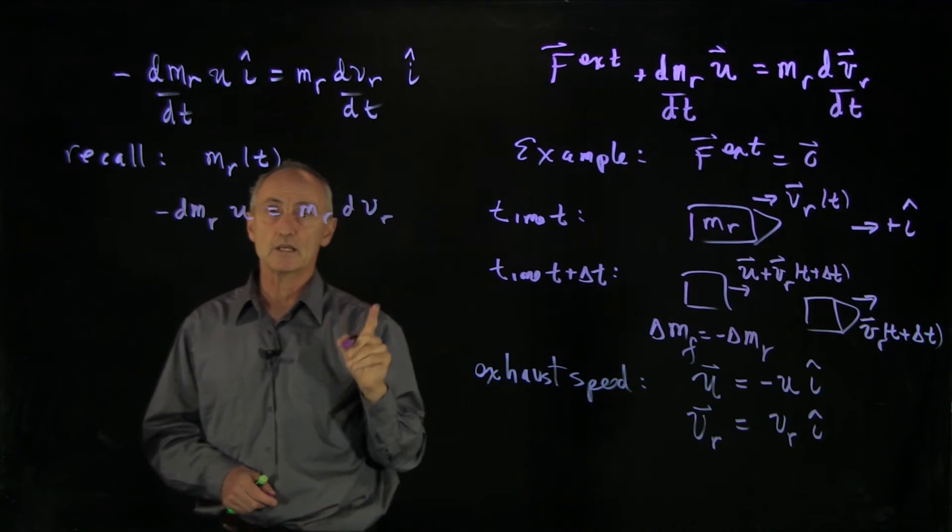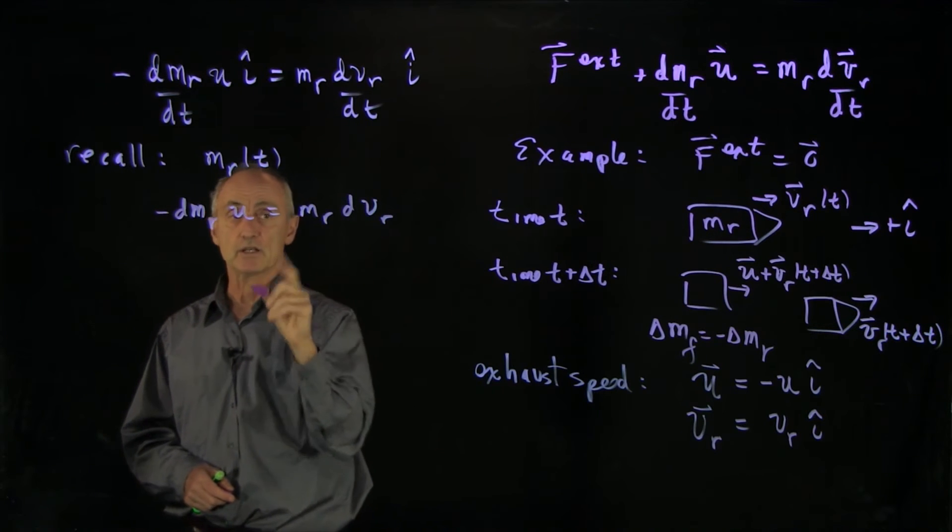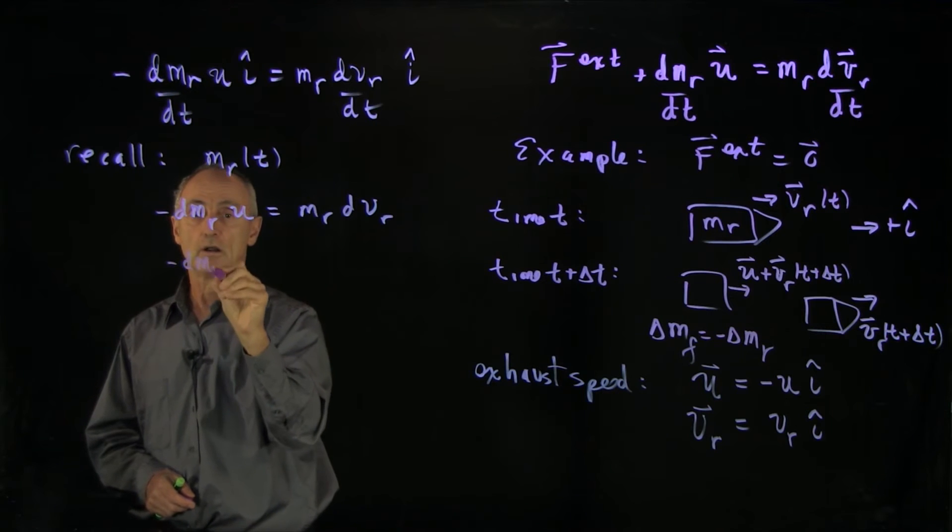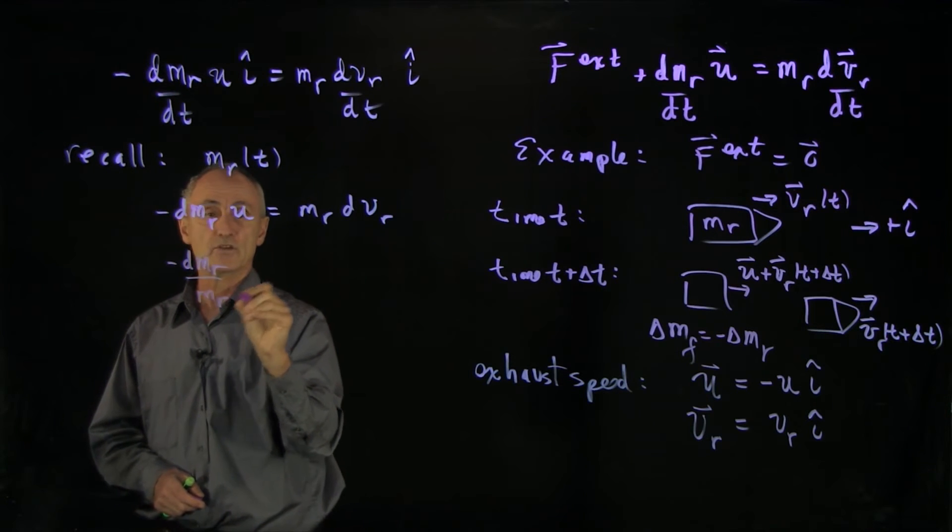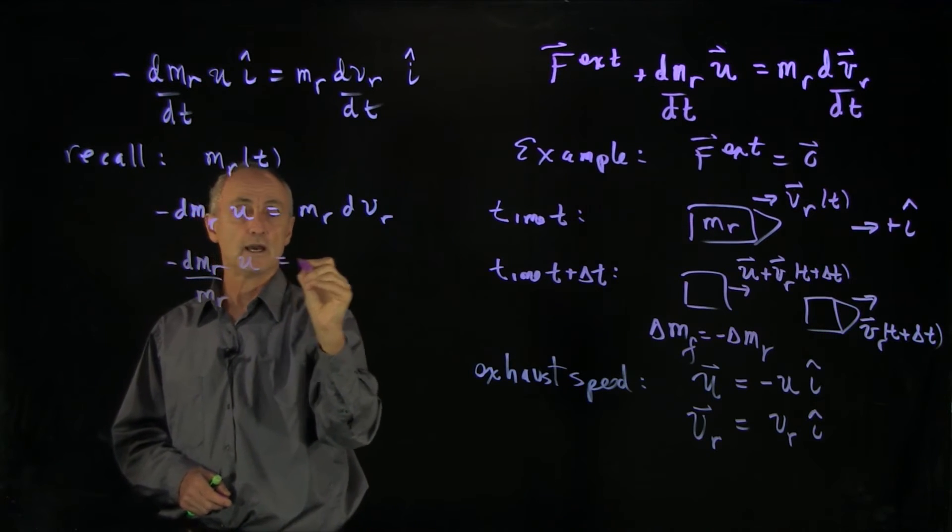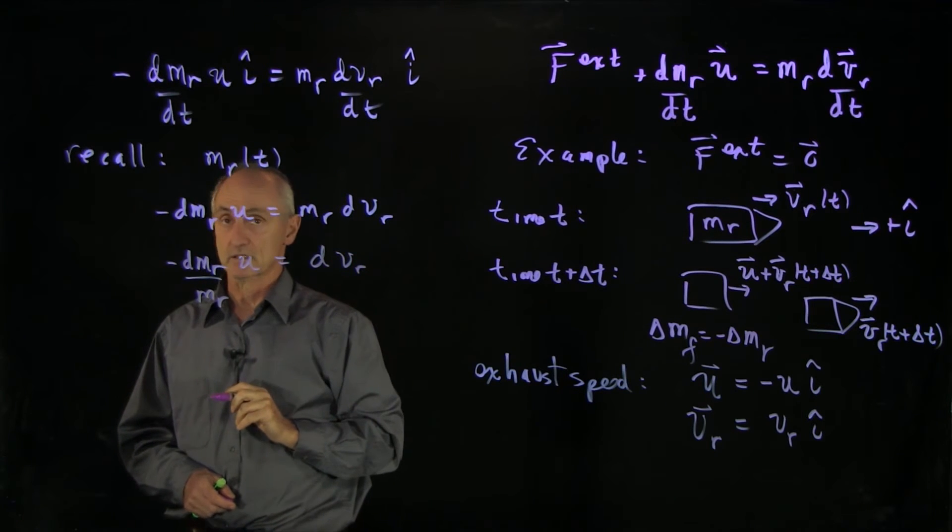Now, this is separable. And I can integrate it. So I'll bring the terms minus dm_r over m_r on this side times u, and that's equal to dv_r on that side.